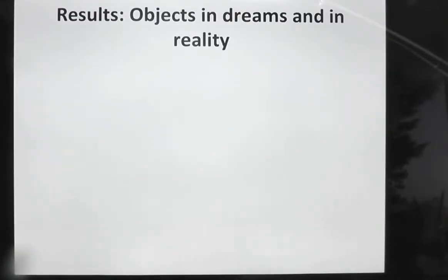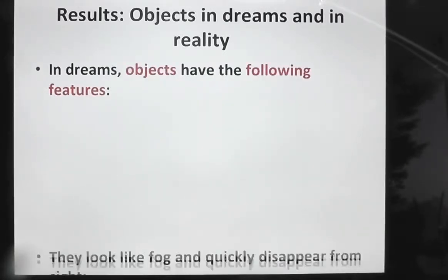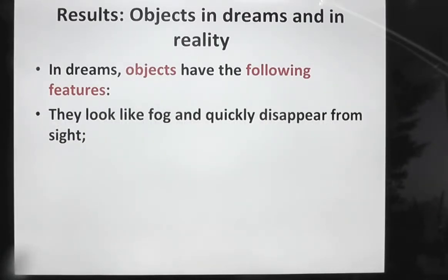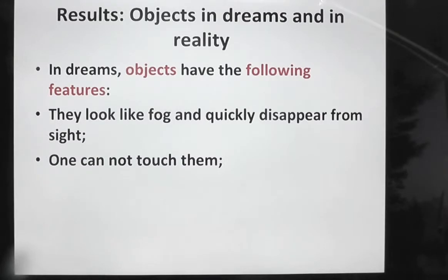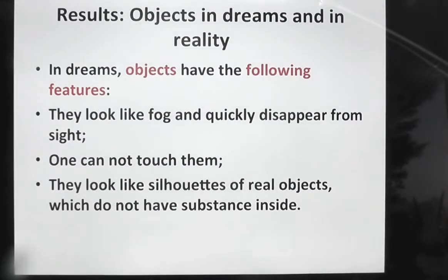Results: Objects in dreams and in reality. In dreams, objects have the following features: they look like fog and quickly disappear from sight; one cannot touch them; and they look like silhouettes of real objects which do not have substance inside.